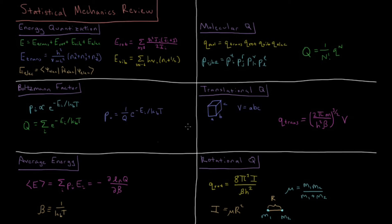The partition function for a molecule is broken up into translational, rotational, vibrational, and electronic parts. The probability of being in a given molecular state is a product of the probabilities of being in each of those states. The partition function for a collection of molecules is equal to one over N factorial times the partition function of an individual molecule to the power of N, the number of molecules.